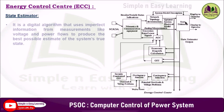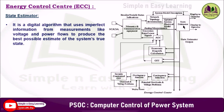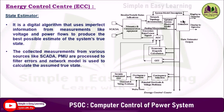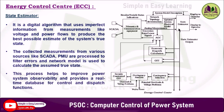The state estimator is a digital algorithm that uses imperfect information from measurements like voltage and power flow to produce the best possible estimate of the system's true state. The collected measurements from various sources like SCADA and phasor measurement units are processed to filter errors, and a network model is used to calculate the assumed true state. This process helps to improve power system observability and provides a real-time database for control and dispatch functions.